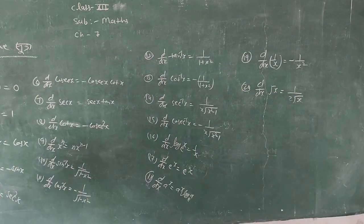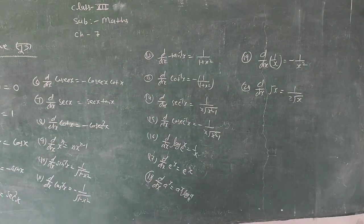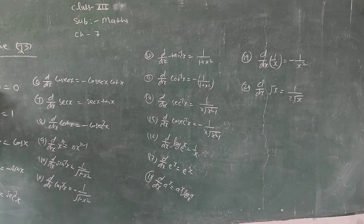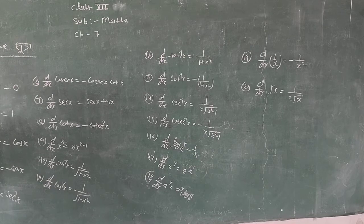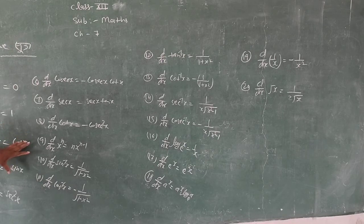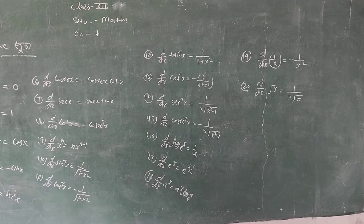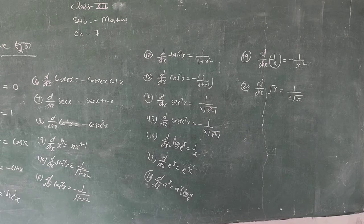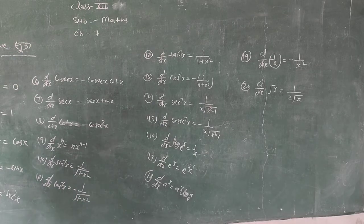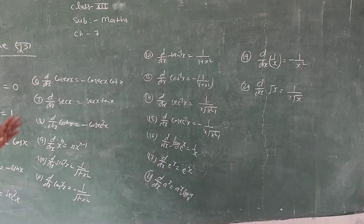So these are the 20 formulas. From 18 to 20, we added: constant differentiation = 0, x with respect to x = 1, trigonometric, inverse, exponential, algebraic, and logarithmic functions. Before doing differentiation, you need to identify what type of function it is, and then apply the appropriate theorem.